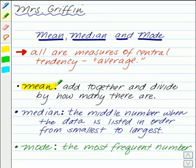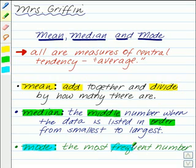The first is the mean, and that's what people typically refer to when they're talking about the average. That's when you add all the data together and divide by how many there are. Then there's the median. The median is the middle number when the data is listed in order, from smallest to largest. And then we have the mode, which is the most frequent number. So any of these can be seen as the average.